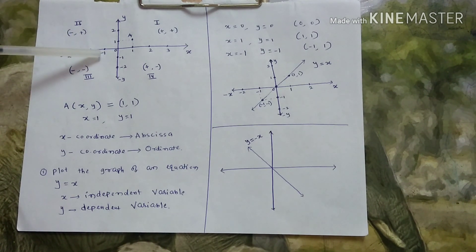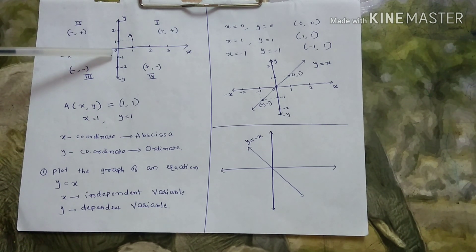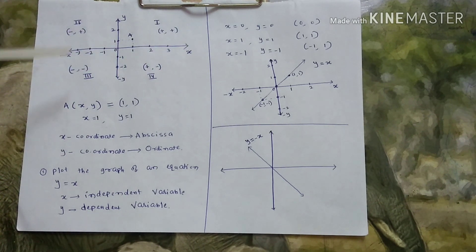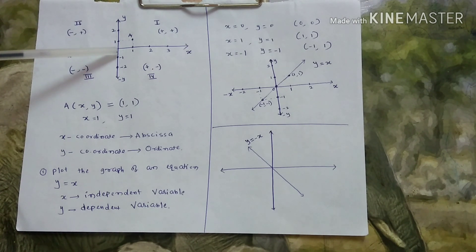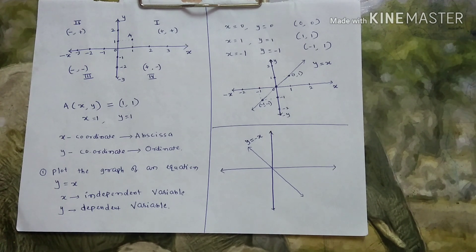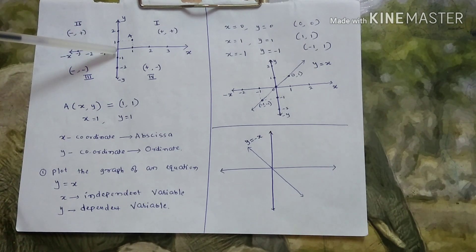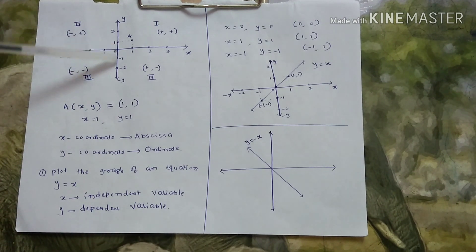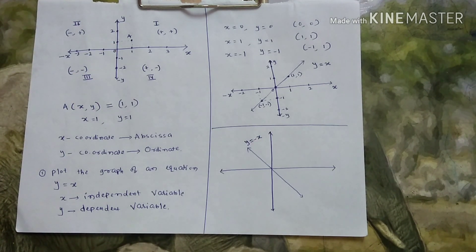This is coordinate system. This is two-dimension. This is center. The point is there. This is O. Origin. From the origin, right side, positive x-axis. From origin, left side, negative x-axis. So, above, from origin, positive y-direction. Down, negative y-direction.